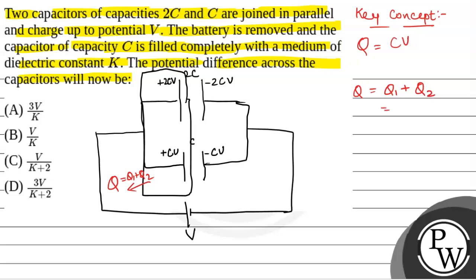That will be equal to 2CV plus CV, that is 3CV. This is the net charge.